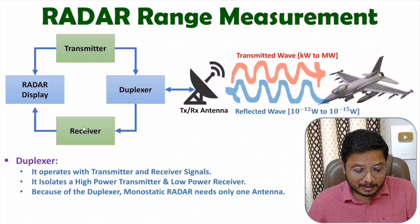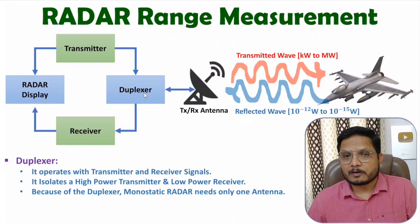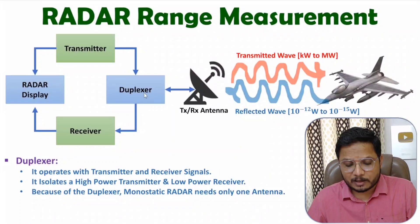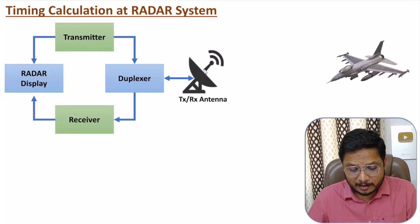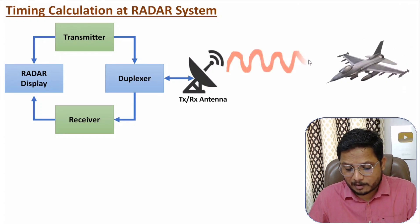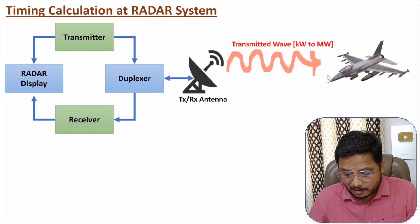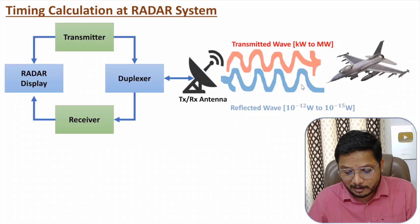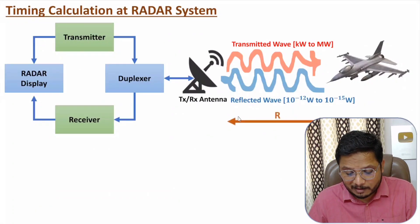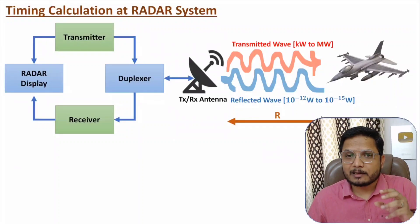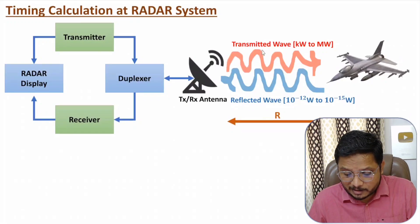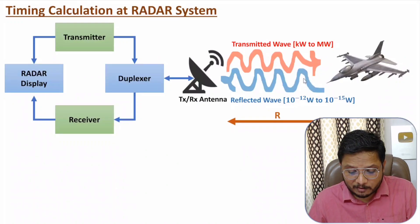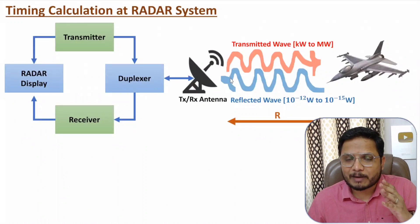That is how the radar functions, but how do we identify range? Let me show the propagation of waves again. The transmitter sends a high power signal, which travels a distance R to the target. After reflection, the signal comes back to the antenna, traveling another distance R. So in total, the signal travels a distance of 2R — first R during transmission and second R during reflection.